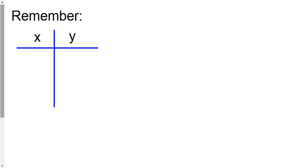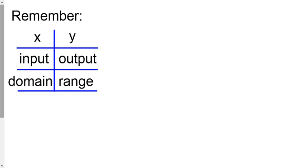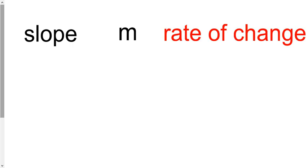Well, if you remember, we talked about x and y having some nicknames: input, output, or domain and range. Well, the slope has another nickname, and of course you know that the letter m is an abbreviation for slope. But when we talk about functions, we normally don't say slope or m. We normally say rate of change.